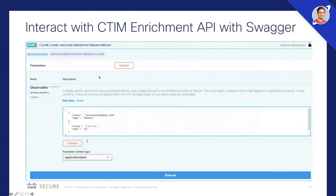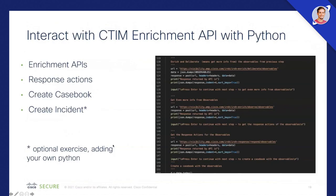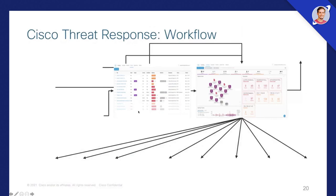We can also interact with CTIM from the API. Everything in SecureX is built on top of APIs with Open API spec and OAuth 2 authentication. You can interact with it via the Swagger UI or the Open API Explorer. Here you'll see some raw CTIM JSON — this is how you describe observables in JSON, giving a value and a type. You can also interact with CTIM via the API in Python or in any language that can make an API call.